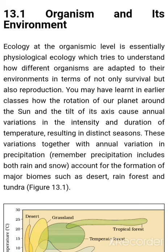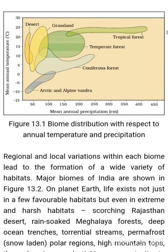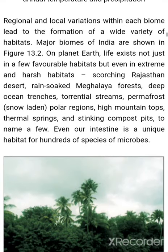You may have learned in earlier classes how the rotation of our planet around the sun and the tilt of its axis cause annual variations in the intensity and duration of temperature, resulting in distinct seasons. These variations, together with annual variation in precipitation — which includes both rain and snow — account for the formation of major biomes such as desert, rainforest, and tundra. Figure 13.1 shows biome distribution with respect to annual temperature and precipitation.